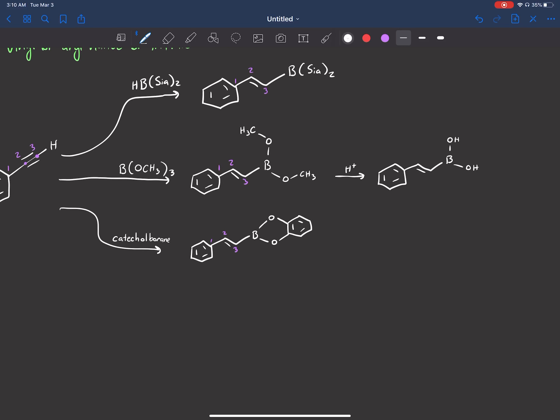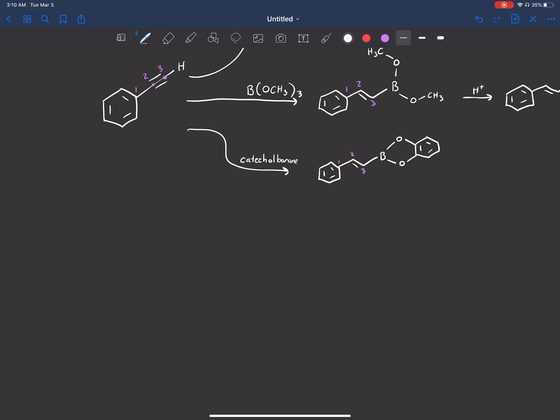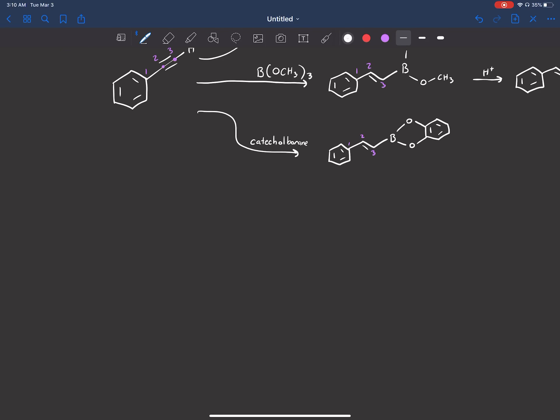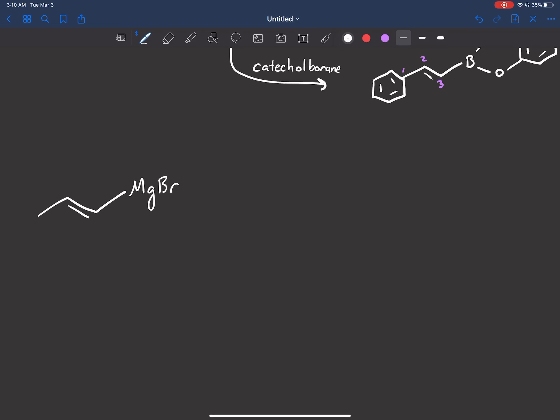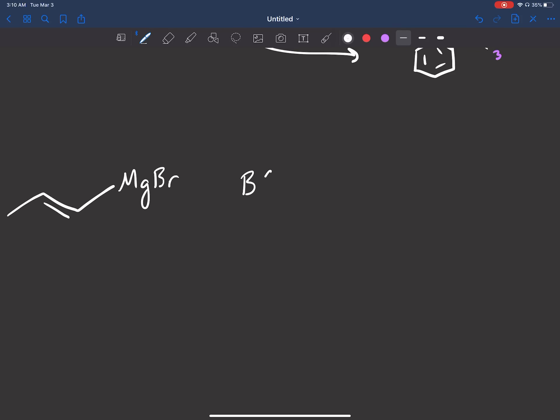So these reagents are the three that we would use. We can also do this with Grignards or lithium reagents. So if I have this MgBr, you can add this B(OCH3)3.